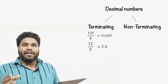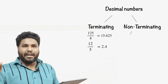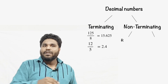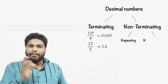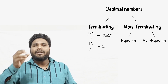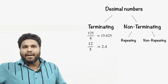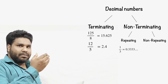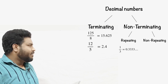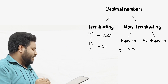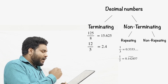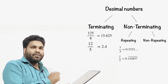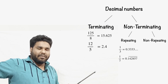Non-terminating numbers are of two types: repeating and non-repeating. Repeating numbers are those where a digit or a group of digits after the decimal point repeats — for example, 0.3333... and when we divide 1 by 7 we get 0.142857..., where the group 142857 repeats itself an infinite number of times.